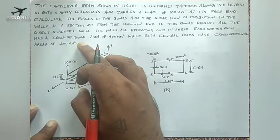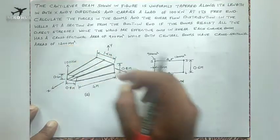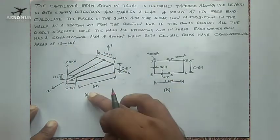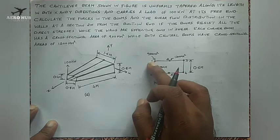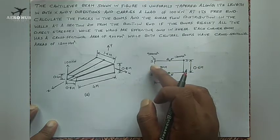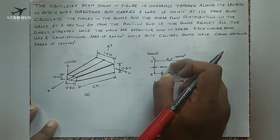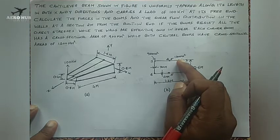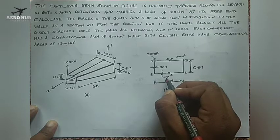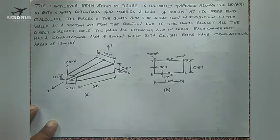Each corner boom has a cross-sectional area of 900 mm² while the central booms have a cross-sectional area of 1200 mm². In diagram B, the section where we find the axial load and shear flow has six boom areas. For corner booms 1, 6, 3, and 4 the area is 900 mm², and for central booms 2 and 5 the area is 1200 mm². The wall thickness is 2 mm for the horizontal wall and 3 mm for the vertical wall.